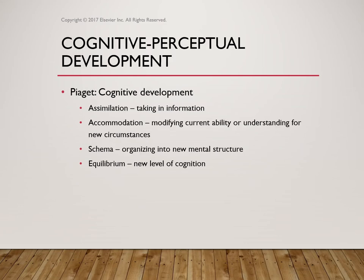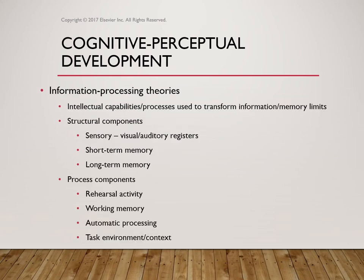When we look at cognitive perceptual development, we look at Piaget. Assimilation is how you take in information. Accommodation is how you modify your current ability to understand new circumstances. Then the schema involves organizing into a new mental structure. And then equilibrium of cognition — that new level of cognition and perception that aids in development.